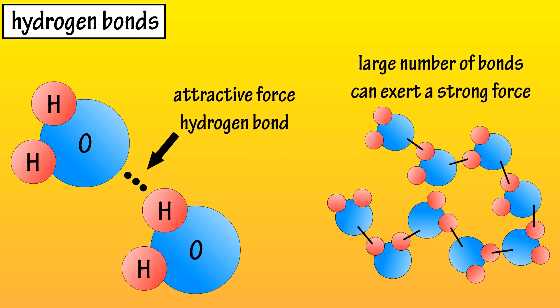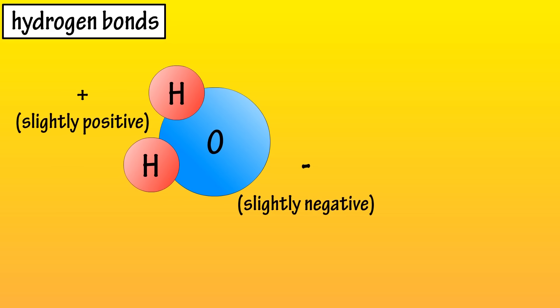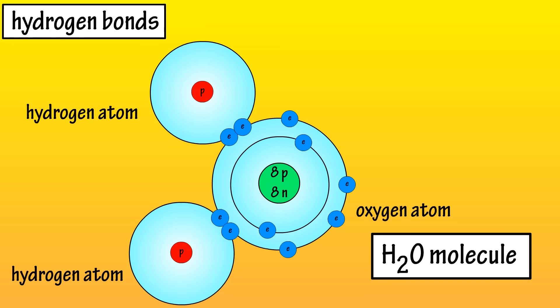Hydrogen bonds are the result of an unequal charge distribution on a molecule. These molecules are said to be polar. If we look at a water molecule, we can see the oxygen atom shares electrons with two different hydrogen atoms.